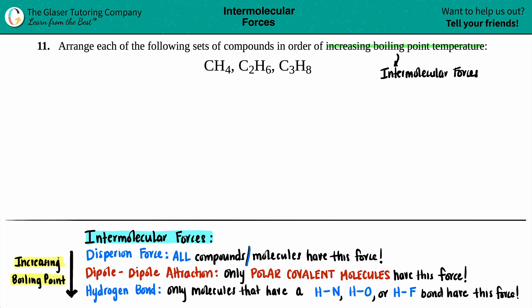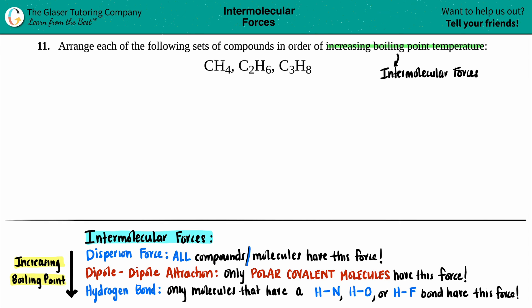It's just one extra step, but if you draw them out it's easier to identify the intermolecular forces. As you get good with Lewis structures, you could probably see what's going on in your mind, but I'll put it on the screen. So we have CH4, C2H6, and then C3H8. Pause the video if you need to and try to write out these three organic molecules.